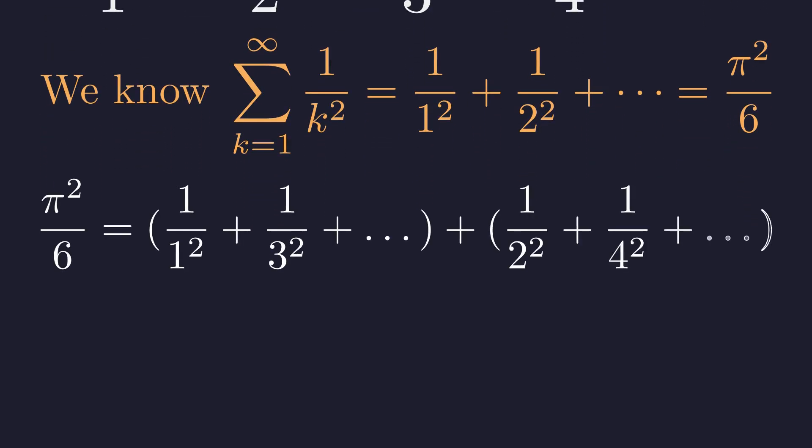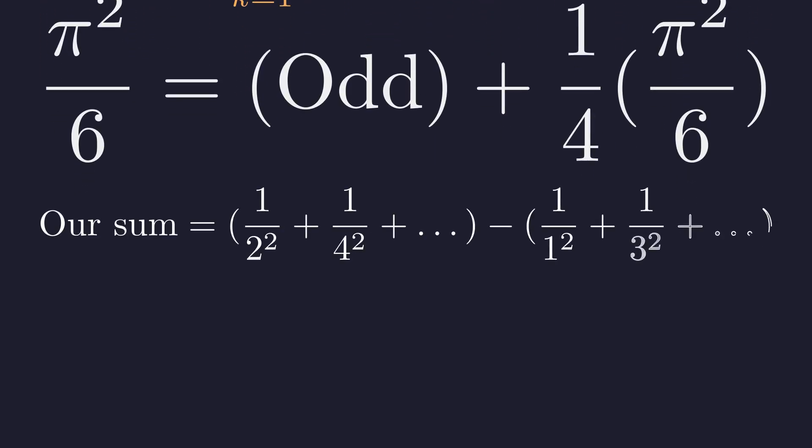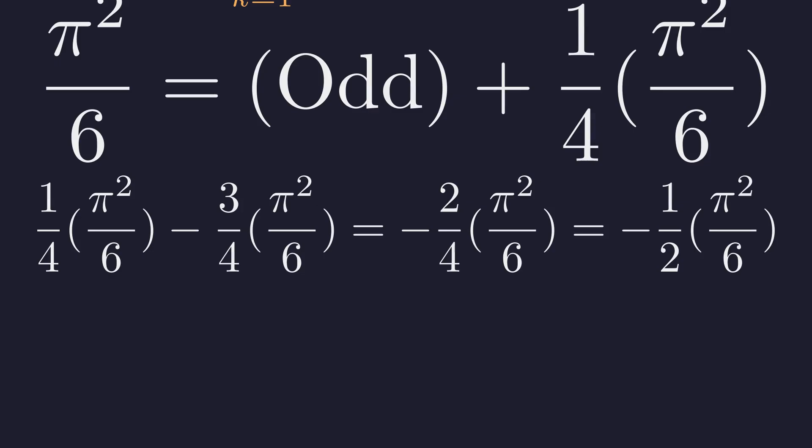Now, here's a trick that feels like cheating, but isn't. Let's split this into odd and even terms and watch what happens. Factor one-fourth out of the even terms and we get back the original sum. So the even terms are one-fourth of the total, which means the odd terms are three-fourths. Our alternating sum is even terms minus odd terms, plugging in what we found. One-fourth of pi squared over 6 minus three-fourths of pi squared over 6. This simplifies to negative one-half times pi squared over 6.